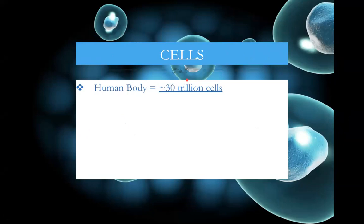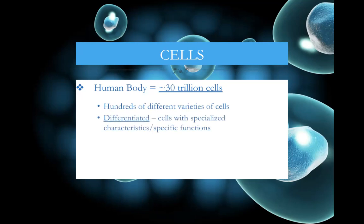The human body is made out of about 30 trillion cells. That is just an estimate — it could be higher or lower than that, but 30 trillion is a pretty good estimate right now. There are a lot of different varieties of cells. They are what is called differentiated — they have specialized characteristics and specific functions. Something like a neuron or a muscle fiber are going to be very different cells.